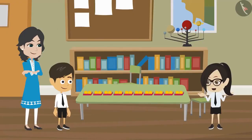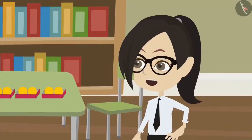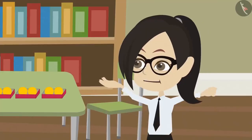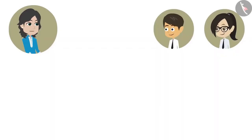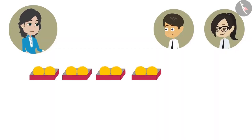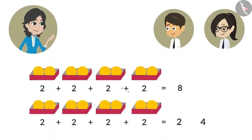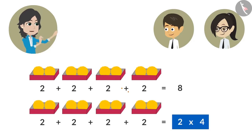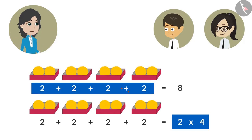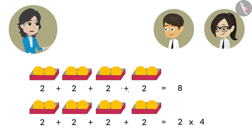But why did you multiply? We are adding them together to find the total number of ladoos. See Vandana, to know the number of ladoos in four boxes, you have added two four times. Instead of this, you can multiply two by four. Multiplying two four times means adding two four times. That is why both answers are the same, which is eight.